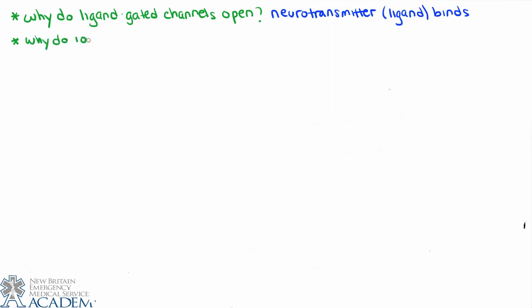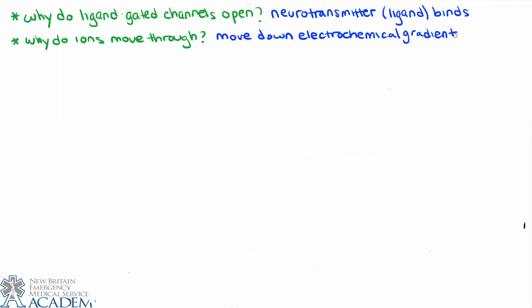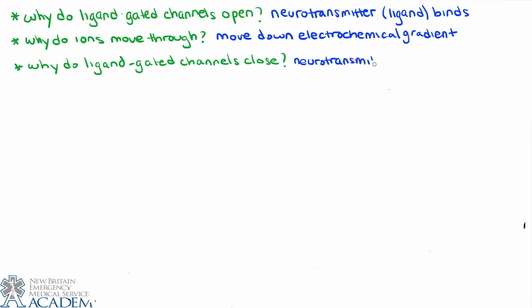Next question: why do the ions move? For example, why do the sodium ions move into the cell? The sodium ions are moving into the cell because they're moving down their electrochemical gradient. It's very important to separate the behavior of the ion channel from the behavior of the ions passing through it — the ligand-gated channels open because of the neurotransmitter; the ions move because of the electrochemical gradient. As a follow-up: why does the ligand-gated ion channel close? The ligand-gated channel can't stay open all the time, or we couldn't maintain our membrane potential effectively. What happens is the neurotransmitters unbind. The neurotransmitter stays bound for a very short period of time, and when it unbinds, the ligand-gated channel closes and no more ions are able to pass through.